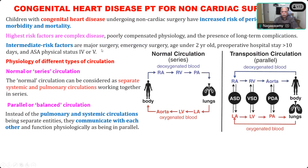In normal circulation, deoxygenated blood comes to the right atrium, goes to the right ventricle, goes to the pulmonary artery, and goes to the lung — all depicted in blue. Once it goes to the lung, gets oxygenated, it becomes red, comes to the LA, goes to the LV, aorta — so oxygenated blood goes to the entire body, and deoxygenated blood is brought back to the heart. This is a serial, round-and-round process, called circulation in series.